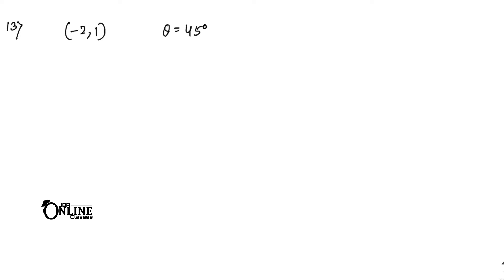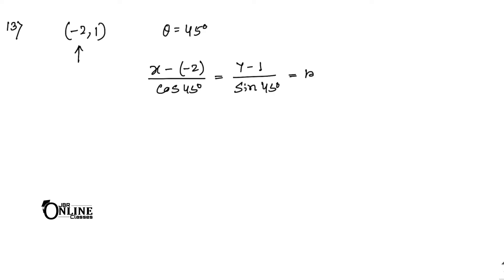Now for sum number 13: the line makes an angle of 45 degrees with the positive direction of the x-axis, so theta = 45 degrees. The line passes through the point (−2, 1). Using the symmetrical form: (x − x₁)/cosθ = (y − y₁)/sinθ = r, we write (x − (−2))/(cos45°) = (y − 1)/(sin45°) = r, which gives (x + 2)/(1/√2) = (y − 1)/(1/√2) = r as the final answer.